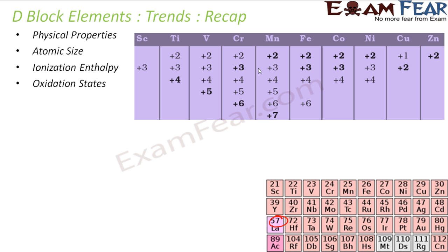Then we have the oxidation state. These transition metals show variable oxidation states. For example, manganese shows +2 to +7; in fact it shows all these oxidation states, but the most prominent are +2 and +7. The number of oxidation states increases as we go across the series and then decreases, because all these oxidation states depend on the presence of unpaired electrons. The number of unpaired electrons goes 1, 2, 3, 4, 5, then 4, 3, 2, 1, 0 — so they increase and then decrease, and thus the number of oxidation states increases and then decreases.